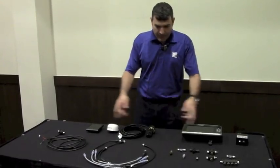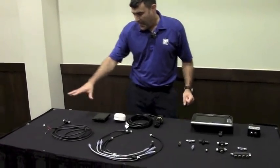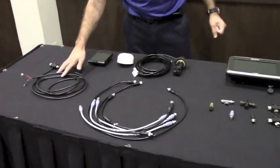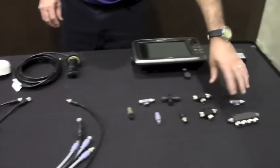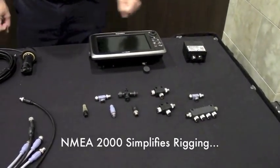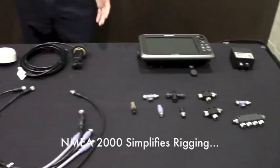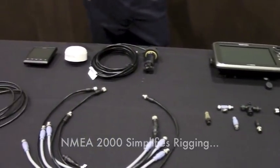So what we have here in the front is some cables, a power injection tee, and then some drop tees and terminators. In the back here are just some common devices made by different manufacturers.